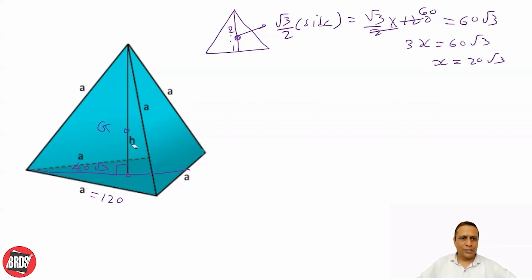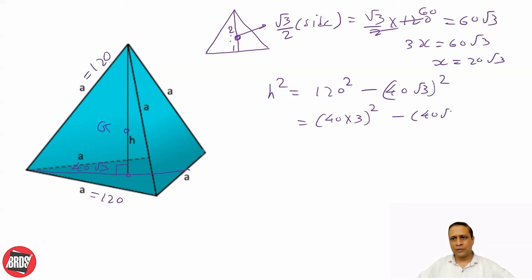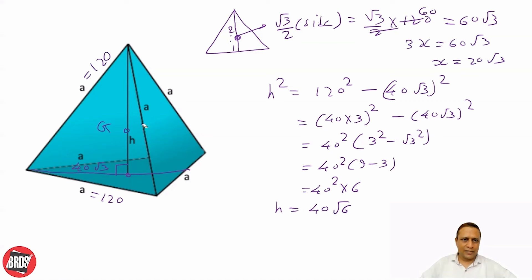To find the height h of the tetrahedron, we use the Pythagorean theorem, since the side a = 120. So h² = 120² − (40√3)² = (40×3)² − (40√3)² = 40²(3² − (√3)²) = 40²(9 − 3) = 40² × 6. Therefore h = 40√6.